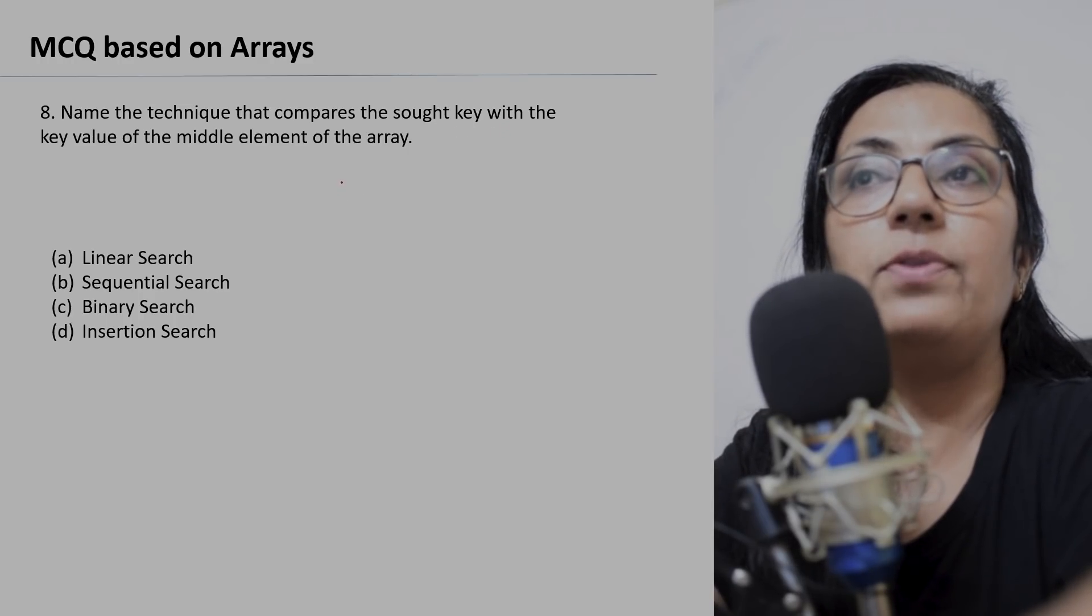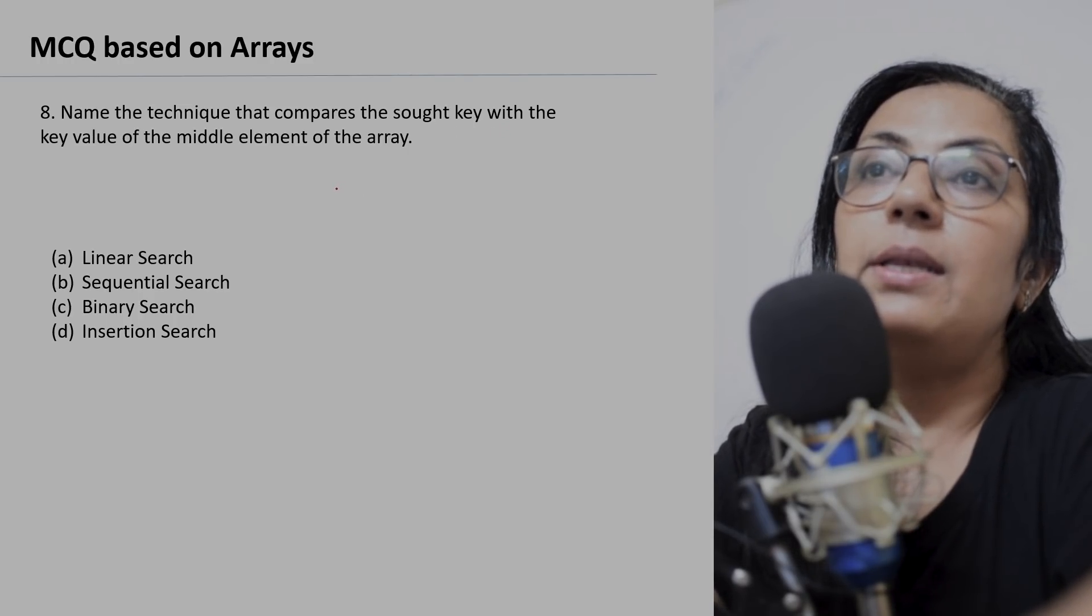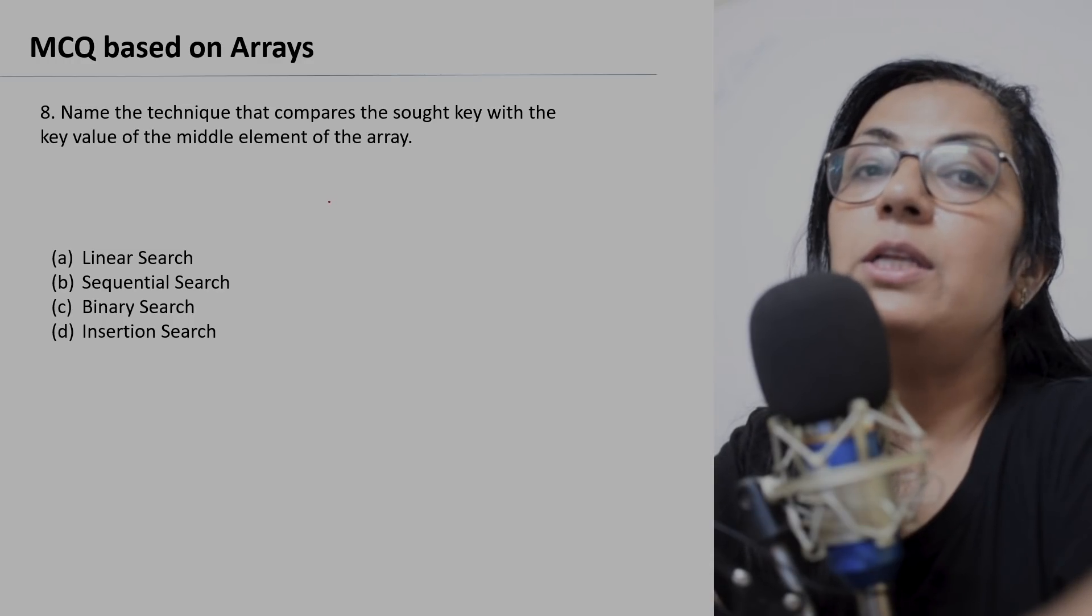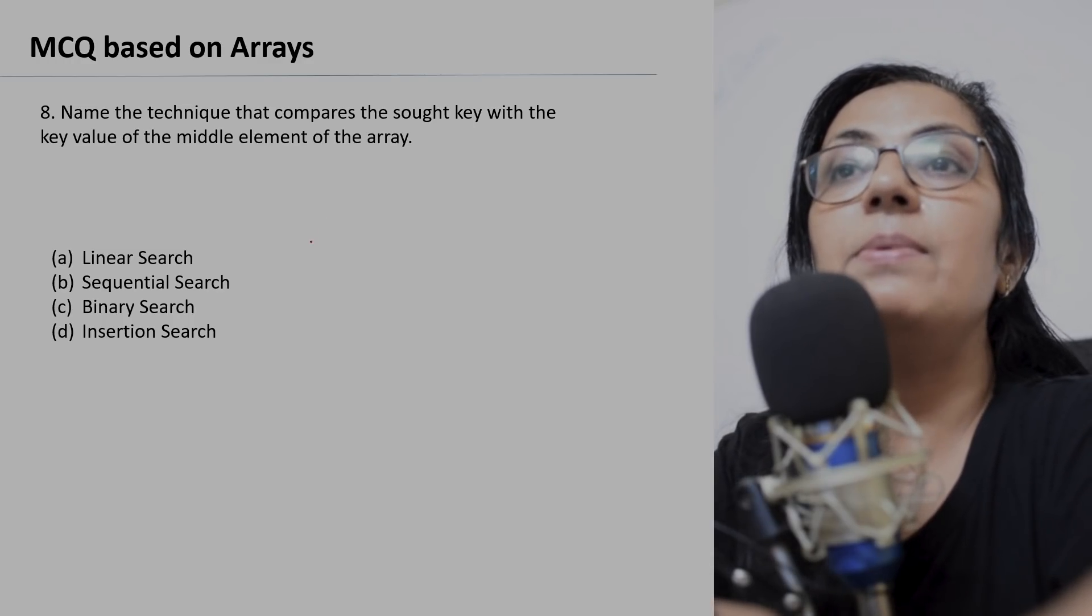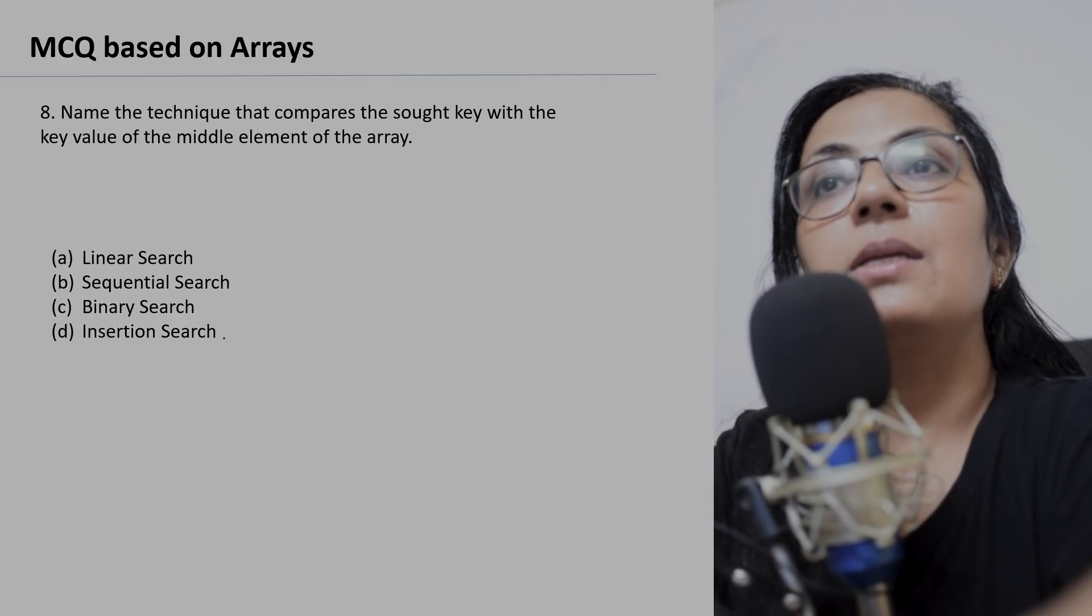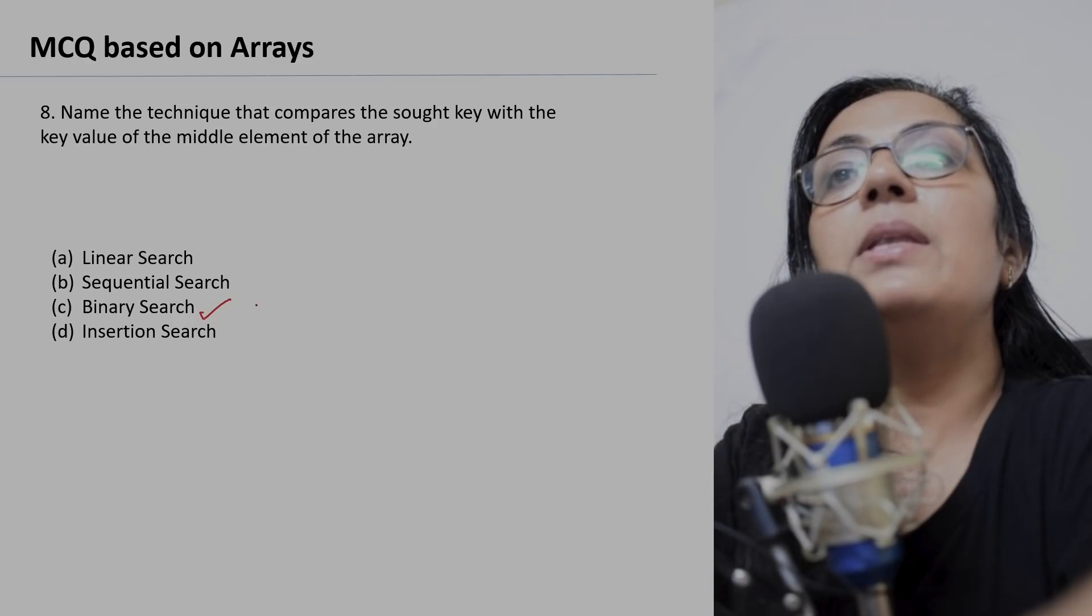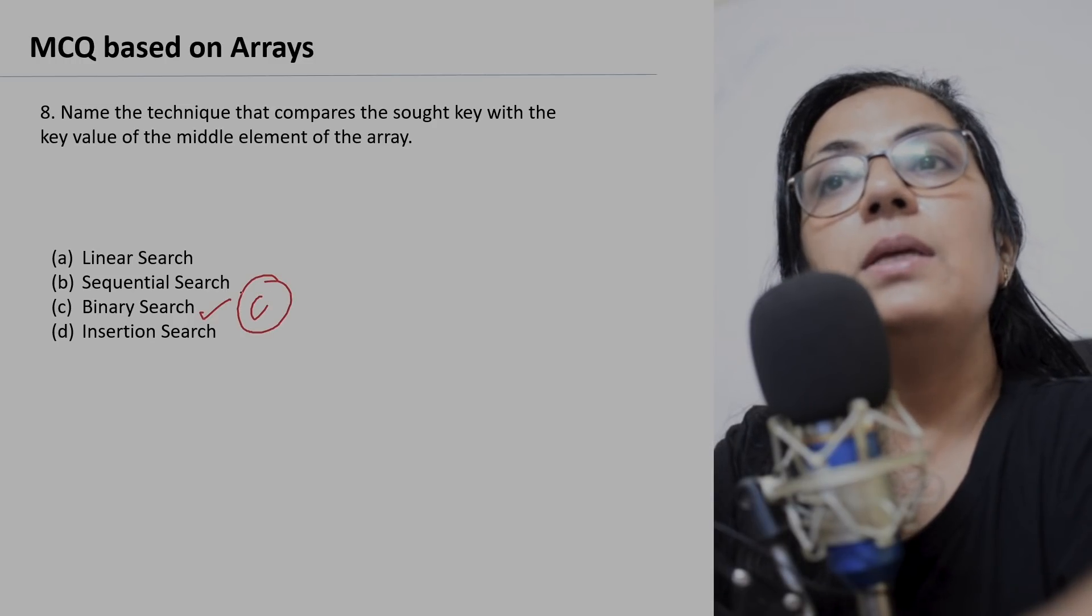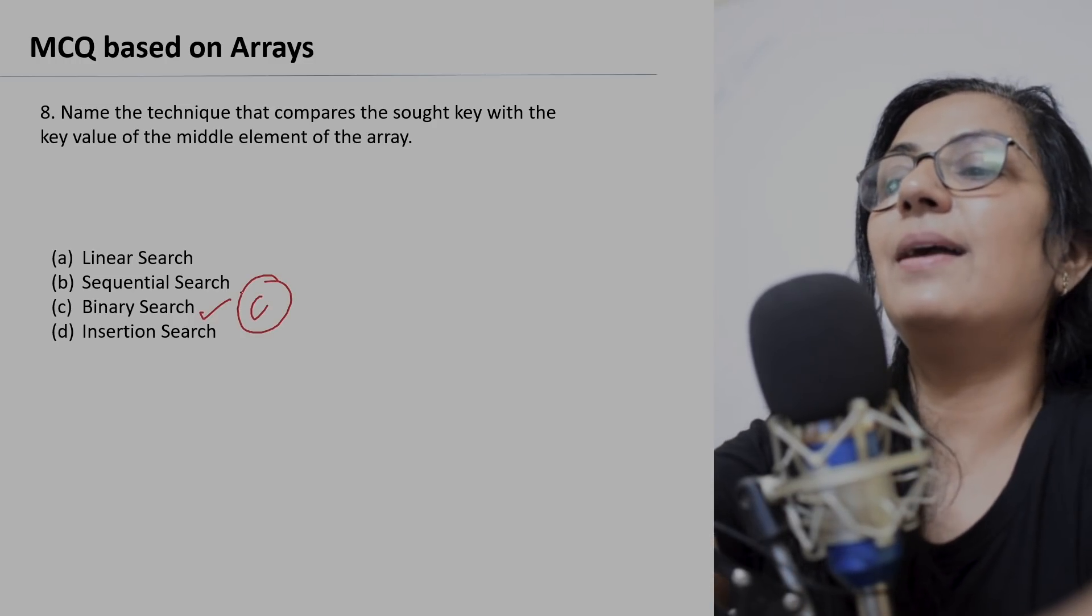Next question: name the technique that compares the sort key with the key value of the middle element of the array. Children, all of us know we have only two techniques in our syllabus: linear search and binary search. For mid element value is compared in binary search technique. Option C is the correct answer.